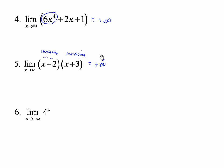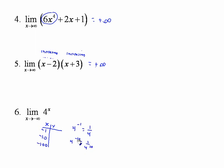Number 6: the limit of 4^x as x gets smaller and smaller. This one's misleading — it's not a polynomial function, it's an exponential one. If you set up a table of values with x = -1, -10, -100: 4^(-1) = 1/4, and 4^(-10) = 1/4^10. With that negative exponent, we get a stable numerator and a larger and larger denominator, so it's approaching 0.